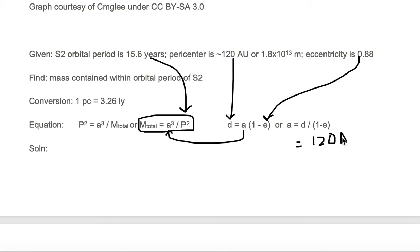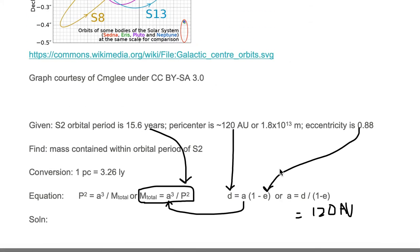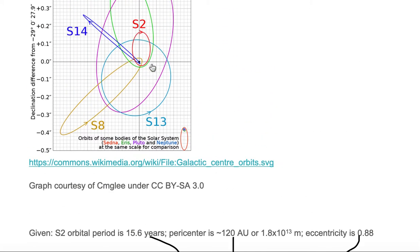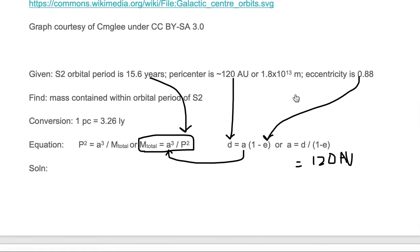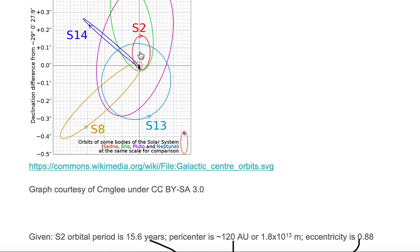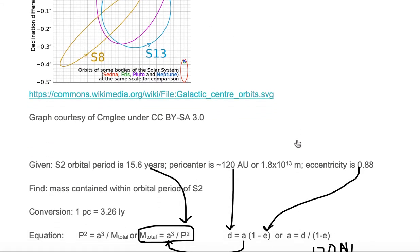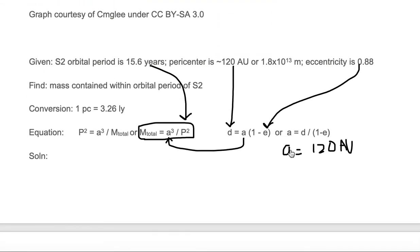We know that the orbit of S2 is highly elliptical and its distance of closest approach is this little piece right there and that's 120 AU. We want to solve for a. A is the semi-major axis which is about half the distance of the longest part of the elliptical orbit.